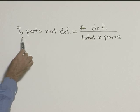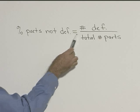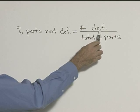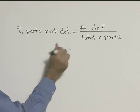So we want to find the percentage of parts that were not defective. That's going to be the number of non-defective parts over the total number of parts.